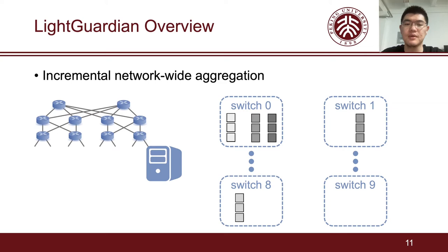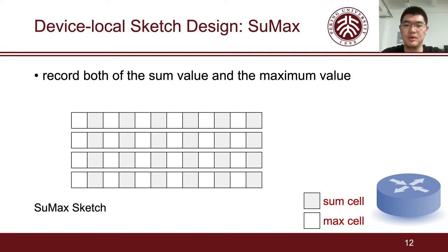Next, I will introduce the design of our SumMax sketch. According to our knowledge, all packet attributes can be accurately estimated by recording the sum and maximum values. Based on this rationale, our SumMax consists of multiple bucket arrays. Each bucket has two cells, a sum cell and a maximum cell, recording sum value and maximum value of attributes.